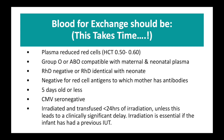If we need to do an exchange, it can take some time to set up because the lab needs to do a lot to the blood before we get it. The blood provided will be plasma-reduced cells, so the haematocrit will be about 0.5 to 0.6. The blood group has to be O or ABO compatible with maternal and neonatal plasma. It must be rhesus-negative or rhesus D identical with the neonate, and negative for red cell antigens to which the mother has antibodies. It must be less than five days old, CMV negative, irradiated, and transfused within 24 hours of irradiation — with irradiation being essential if the infant has had a previous in utero transfusion.